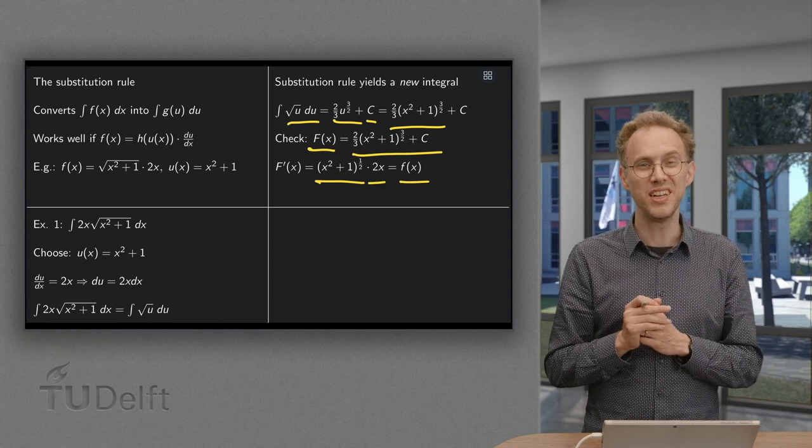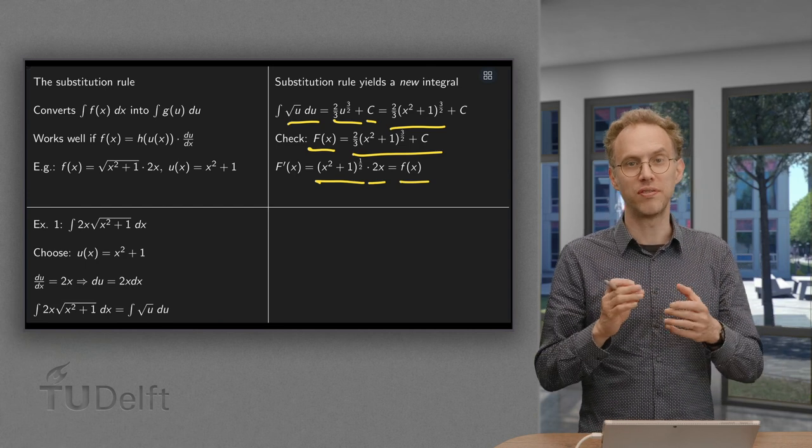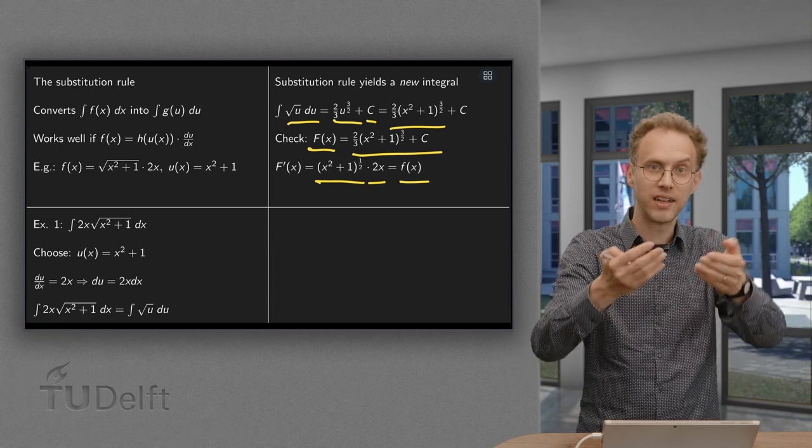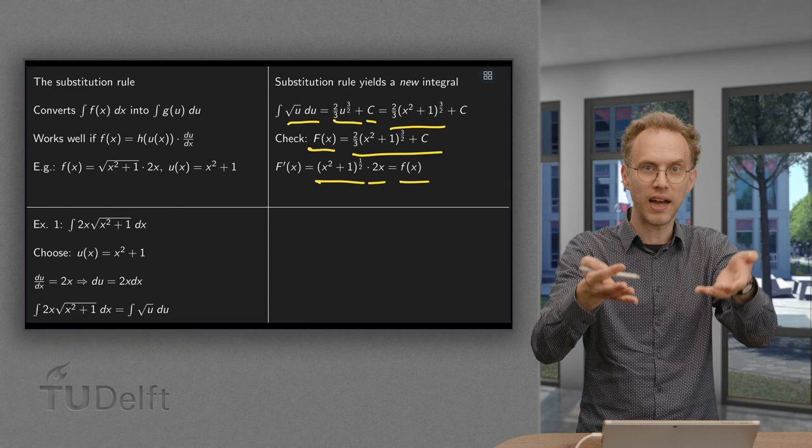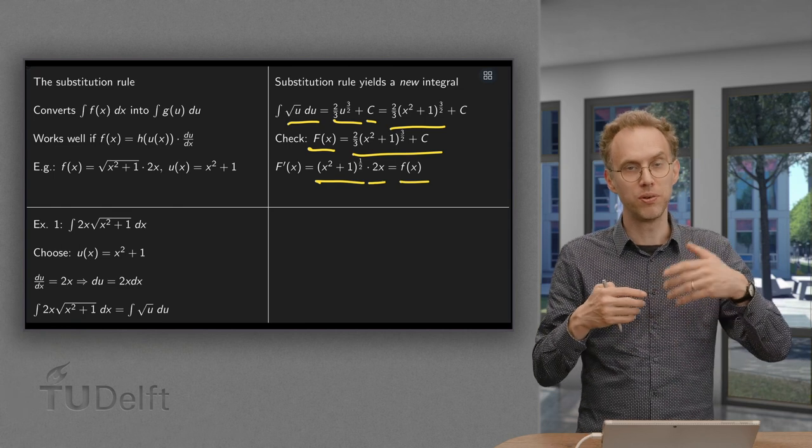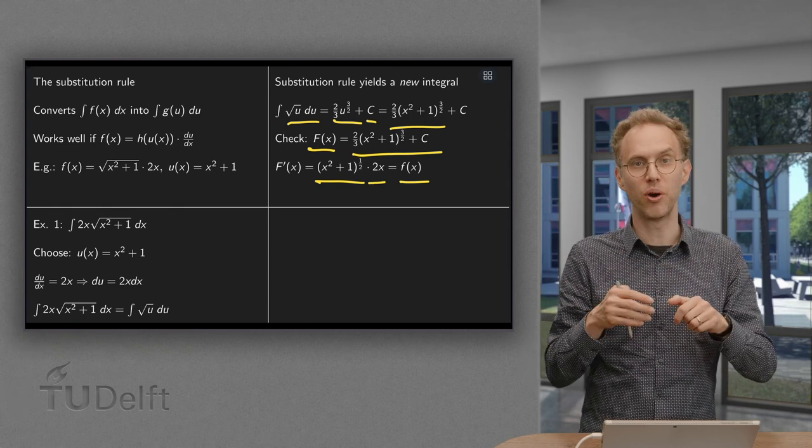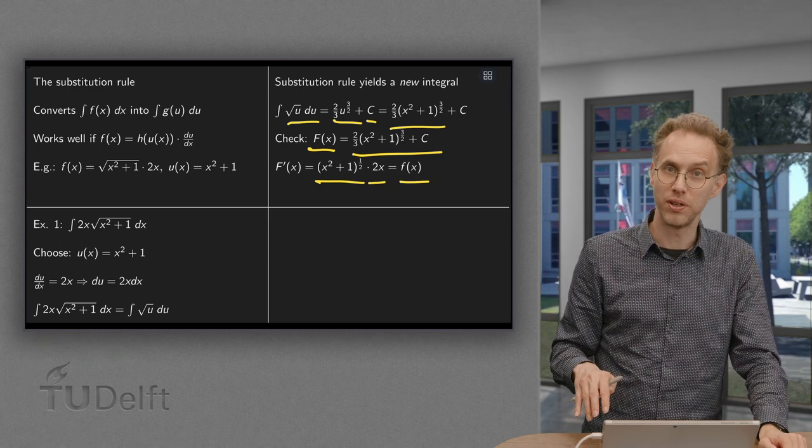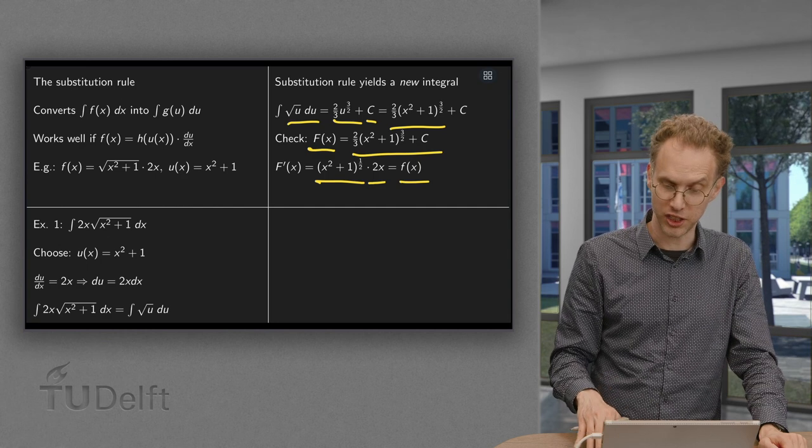And now we also see why the substitution rule is kind of the equivalent of the chain rule, because if you go back, so you have your antiderivative, you go back, and if you compute your small f(x) going back, then you need the chain rule there. So that's why it's reminiscent of the chain rule in differentiation.